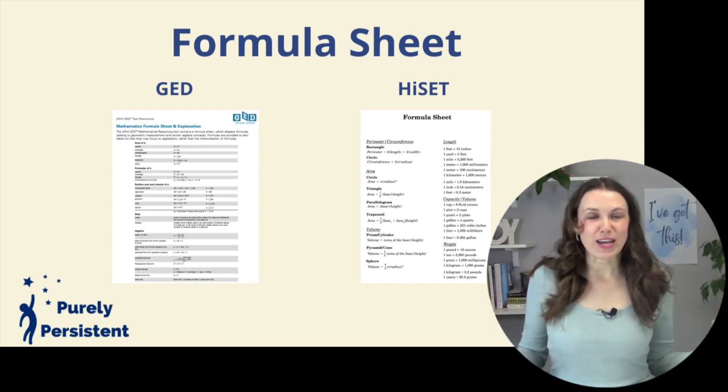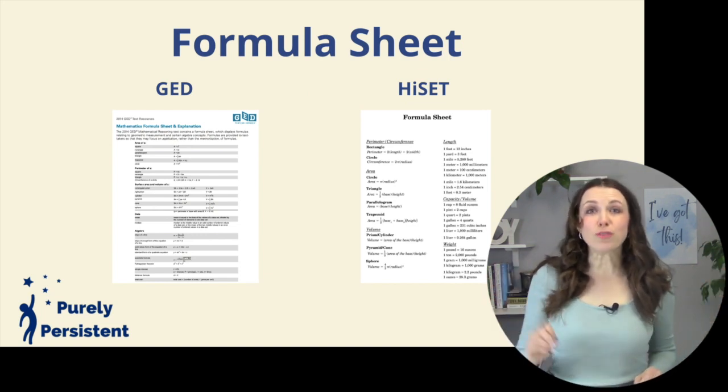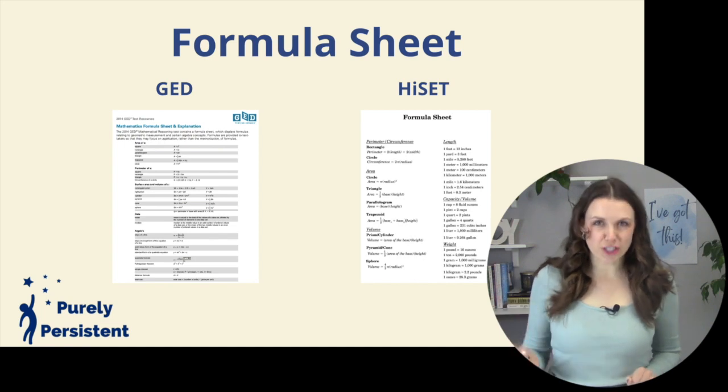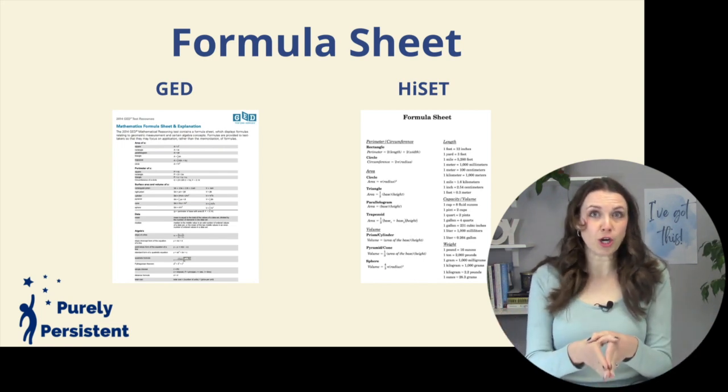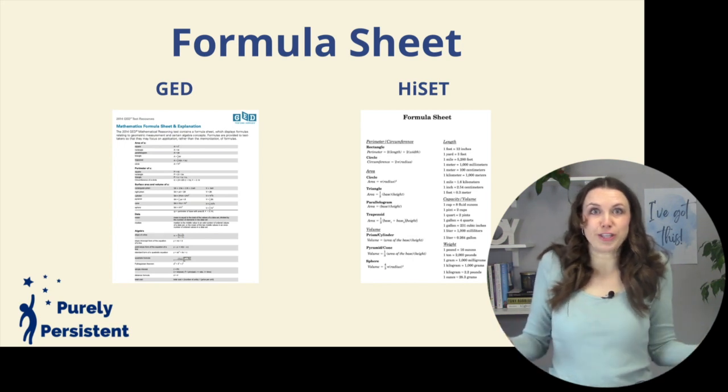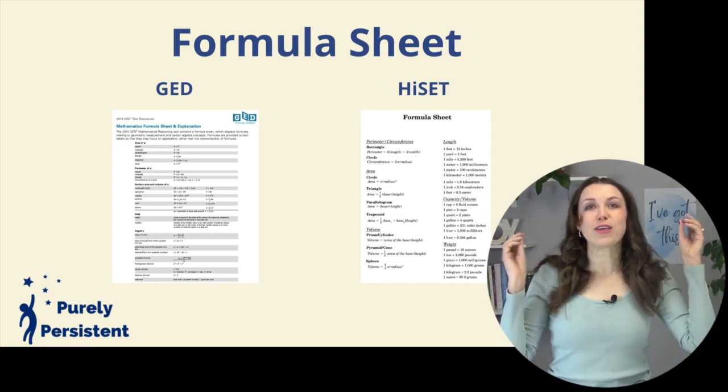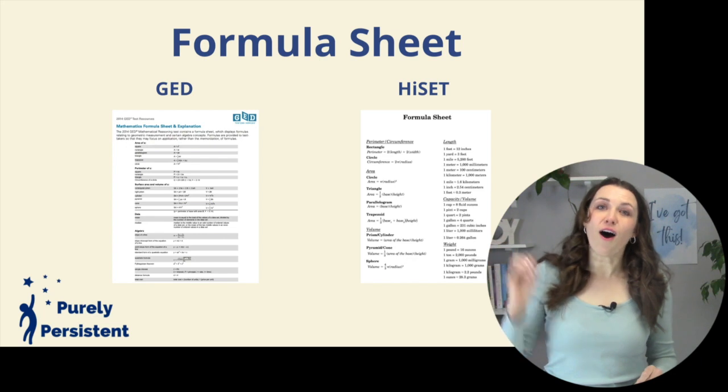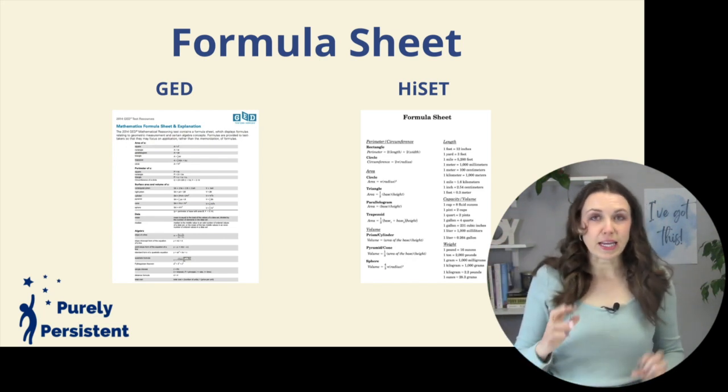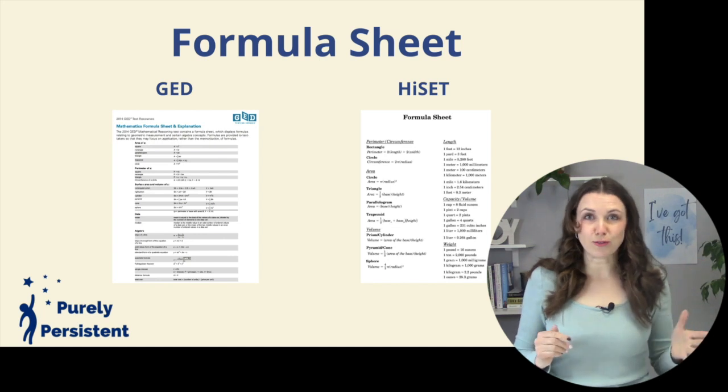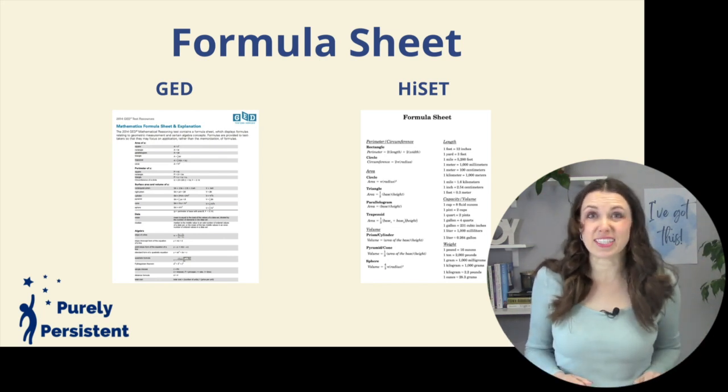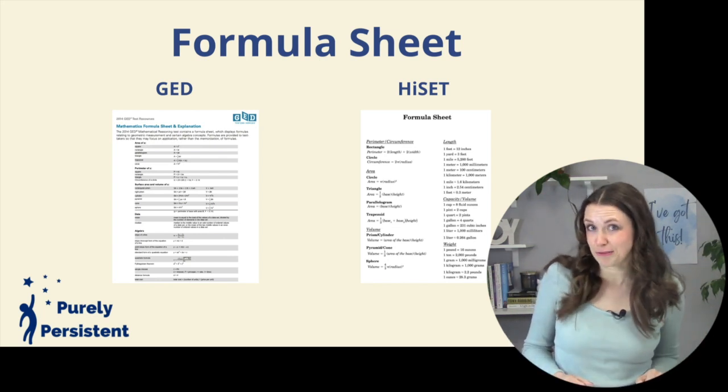Next is the formula sheet. So really make sure that you know how to read the formula sheet, because a lot of times people don't really study the formula sheet. But this is like your cheat sheet. This is your guide so that you don't have to memorize all of the equations. Now do make sure that you know which ones you need to memorize and which ones you don't. For instance, HiSET students need to memorize the quadratic equation.